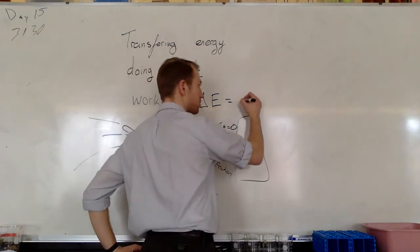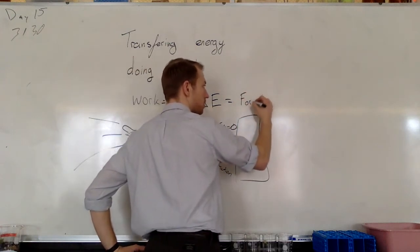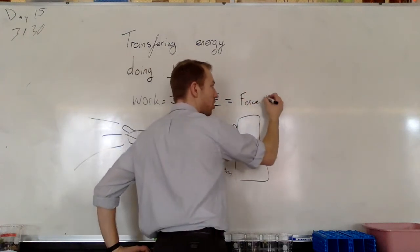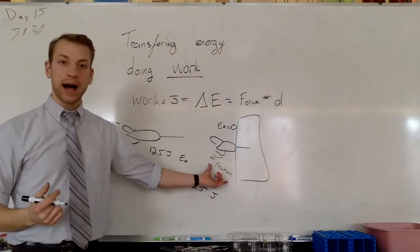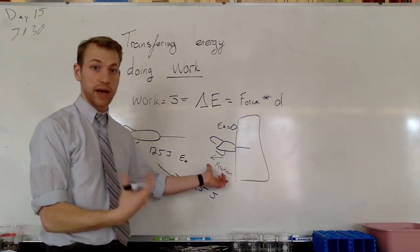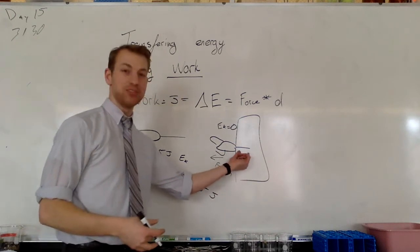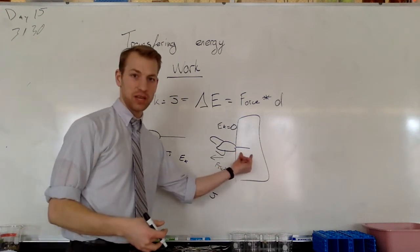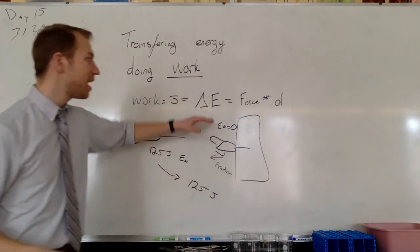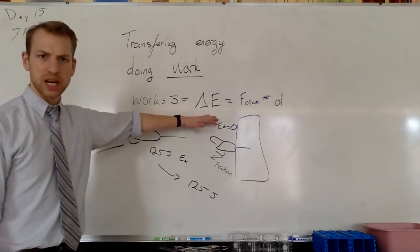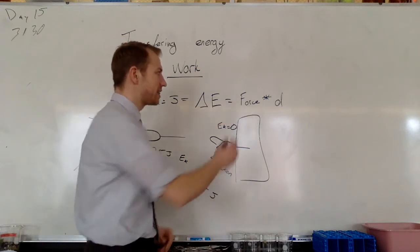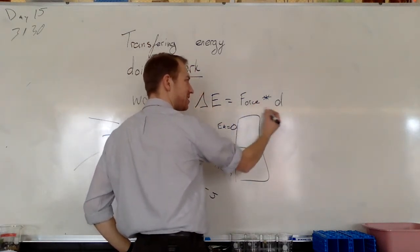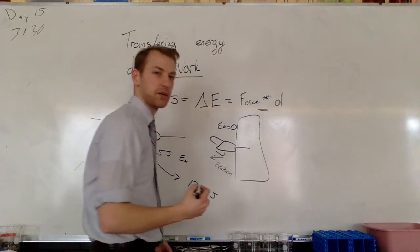Another way that we can calculate work is by the amount of force that is applied over a given distance. If we knew how much friction was as a force and we knew how deeply this dart was embedded, we could determine how much work was done here. The important thing to note is that this force and this distance must be parallel to one another.